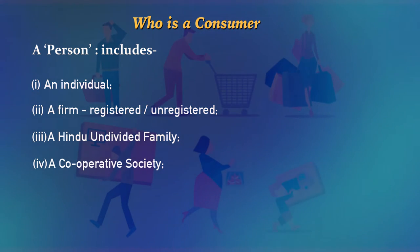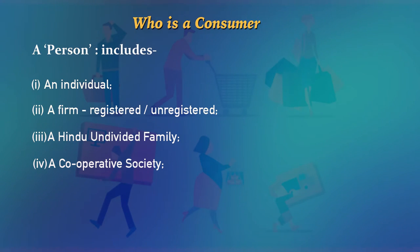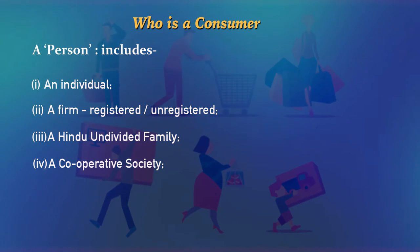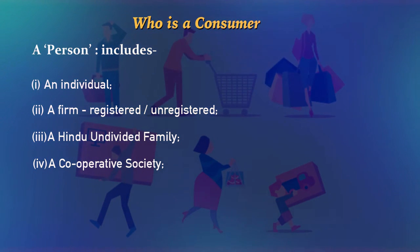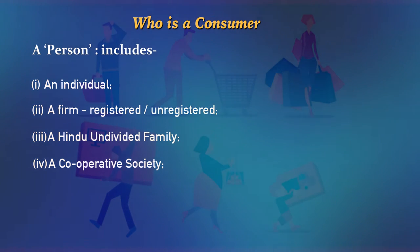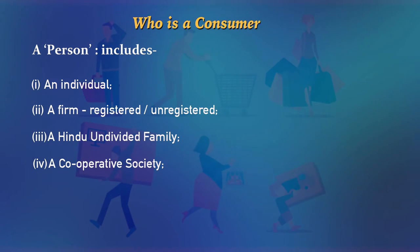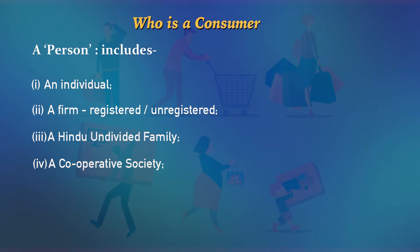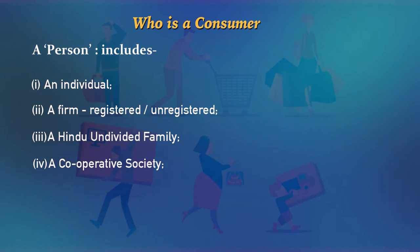If a cooperative society, in the process of doing business or providing service to members, purchases any goods or hires services, then it becomes a consumer. For example, a marketing cooperative society that engages vehicles for transporting its own goods — whether it purchases those vehicles or hires transport services from a transport company — is involved in consumption of goods and hiring of services.